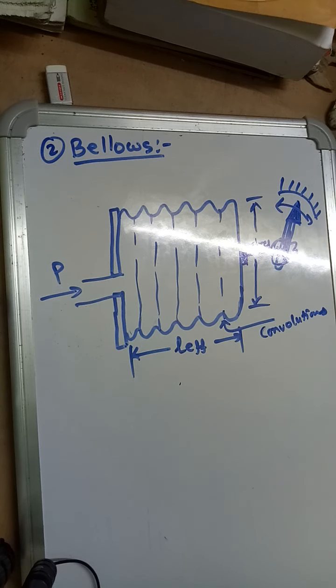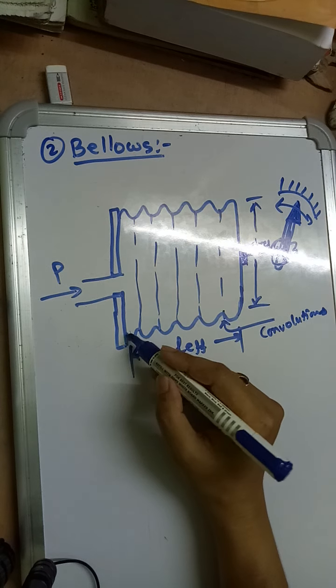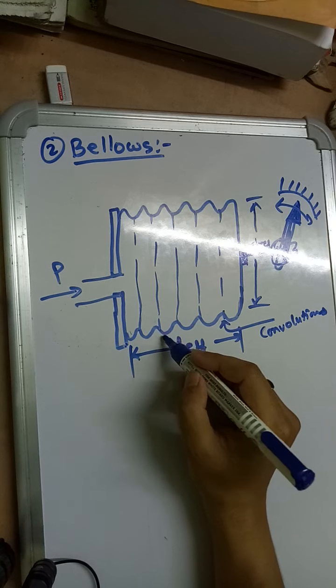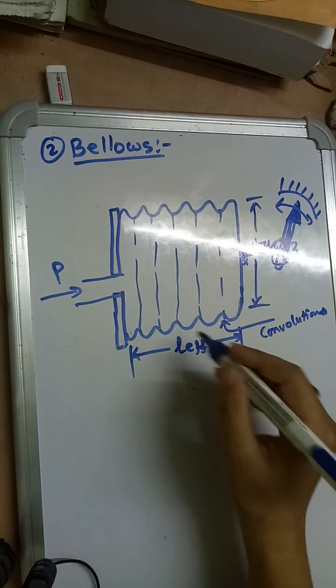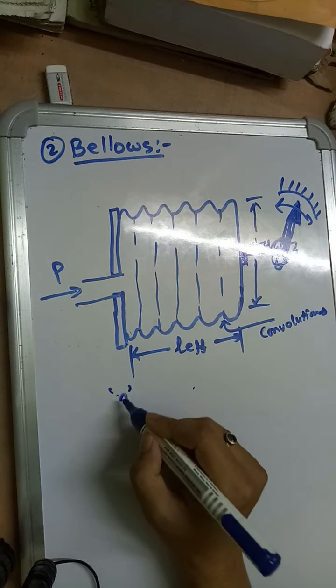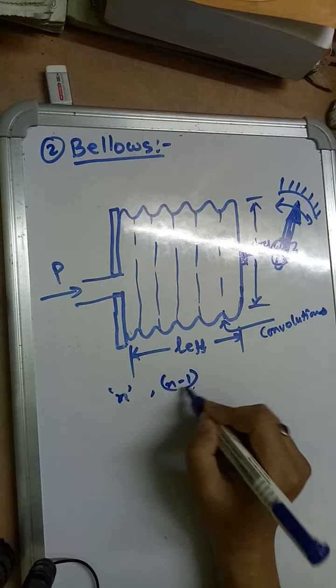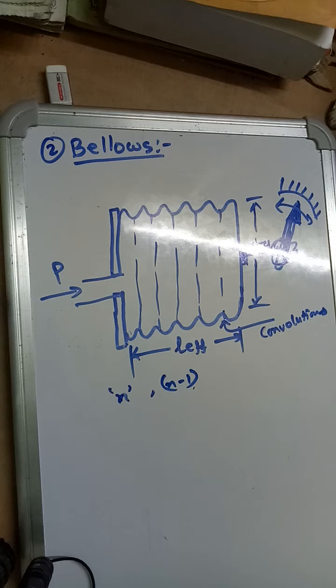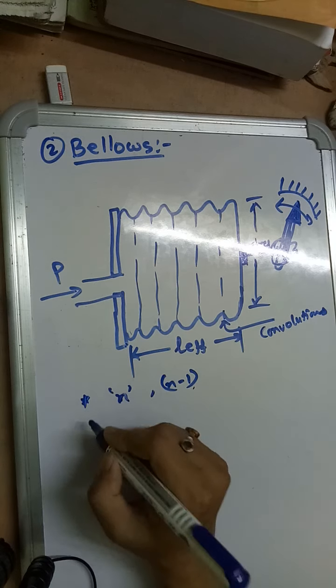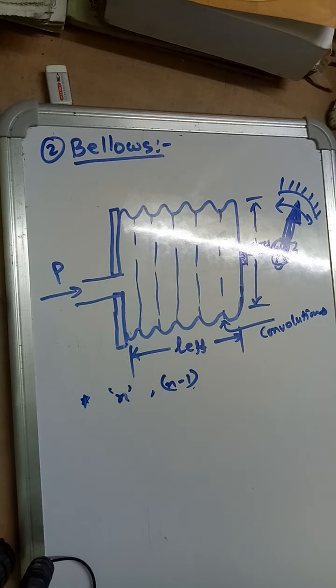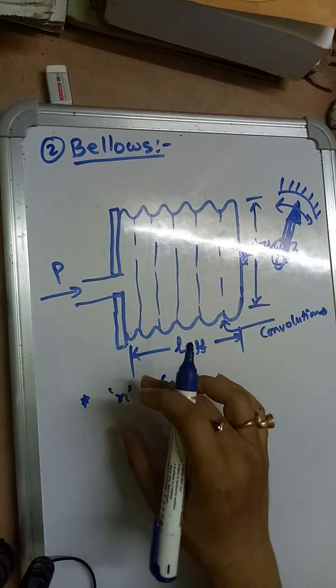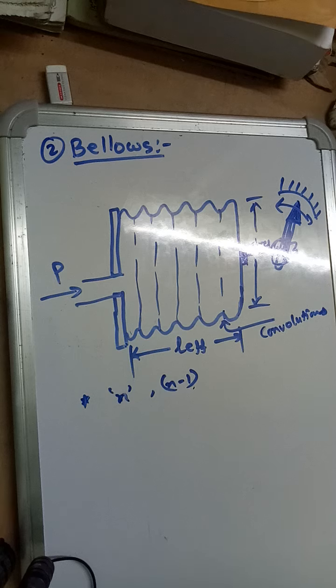For n convolutions total, n-1 convolutions are active. If the total number of convolutions is n, then only n-1 convolutions are active. Remember this point. Based on construction, I will not ask any question, but remember these things - these are very important.